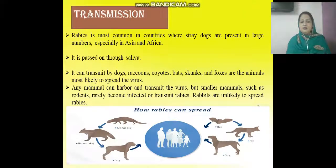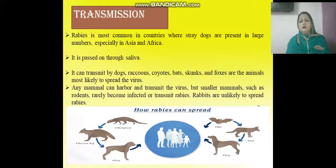Rabies is common in countries with large stray dog populations, especially in Asia and Africa. The disease is transmitted through infected saliva and can be spread by mammals such as dogs, raccoons, coyotes, bears, skunks, and foxes. Smaller animals such as rodents rarely become infected or transmit rabies.